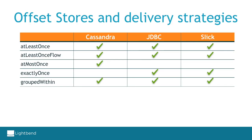We have three projection implementations: Cassandra, JDBC, and Slick — the Slick one is only available for Scala. Each projection implementation provides its own offset store and delivery strategies. This matrix shows the supported strategies for each implementation. They support almost the same strategies, except for at-most-once which is only available for Cassandra, and exactly-once which is only available for JDBC and Slick.